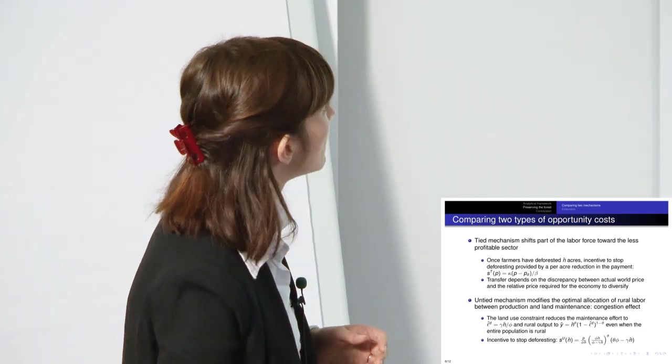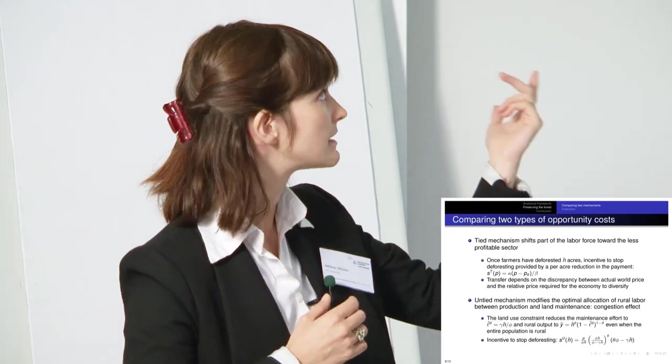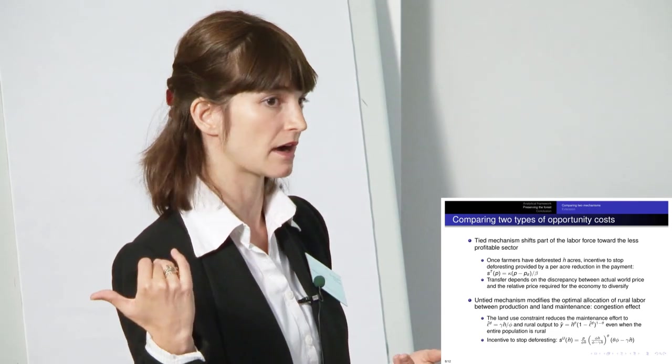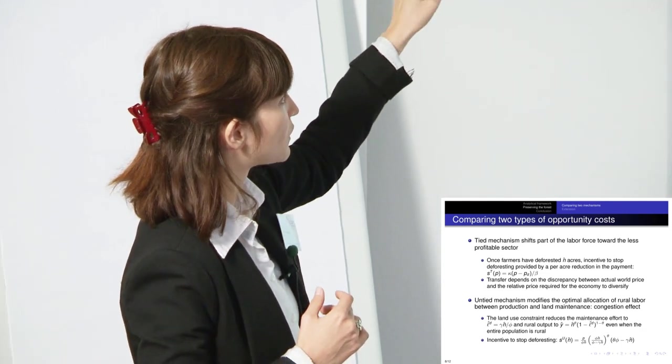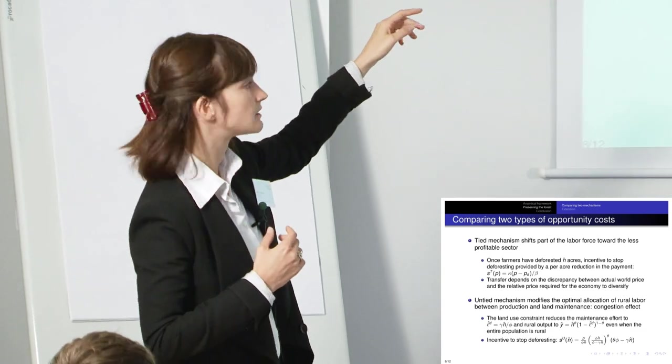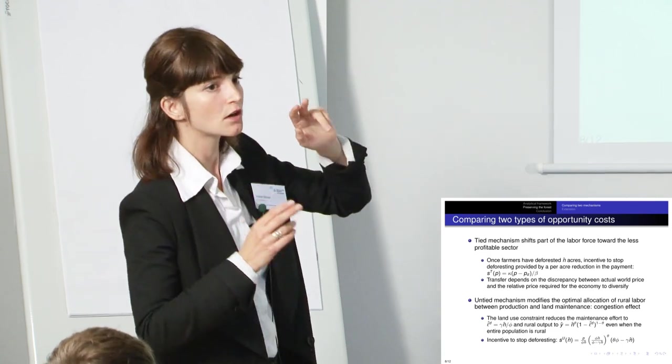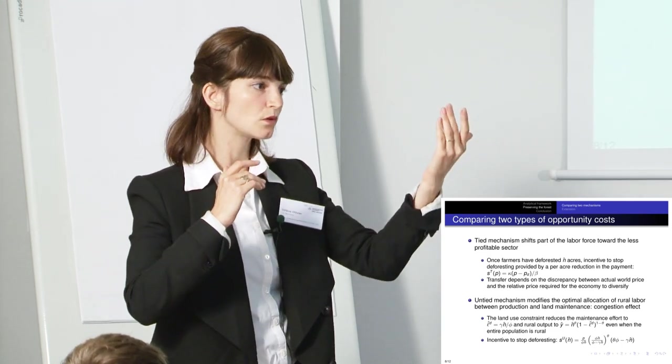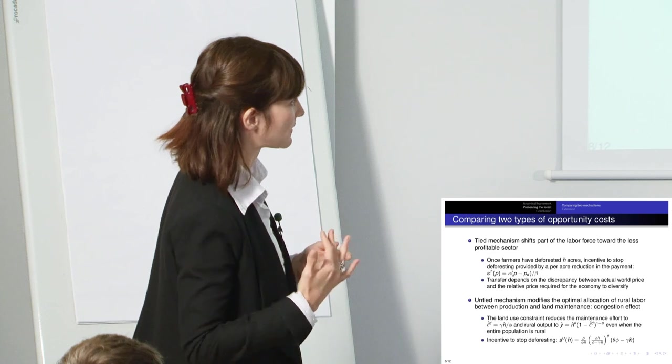So this is how I try to define it in the most simple way. The tied mechanism is willing to shift some of the labor force toward industry. And industry is, in this case, less profitable because the economy has a comparative advantage in agriculture. And this is a way to describe what is the incentive. So I define it endogenously. And the incentive to stop deforesting will depend on this difference between the actual world price and the world price that ensures diversification, which was my PD.